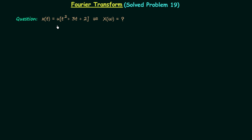Signal x(t) is equal to u(t²+3t+2) and we are required to calculate its Fourier transform X(ω). Signal x(t) is not expressed in terms of any standard signal we have studied, so our first task is to represent or express signal x(t) in terms of some standard signal, and from there we can easily calculate the Fourier transform X(ω).